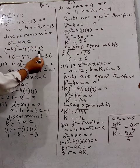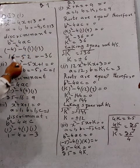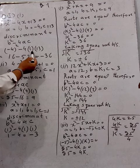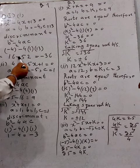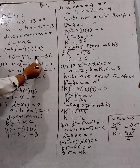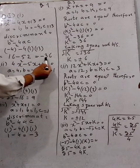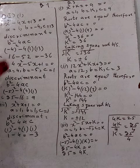So minus 4 squared equals 16, minus 4 times 1 times 13 equals minus 52. Then 16 minus 52 equals minus 36. That is the discriminant.